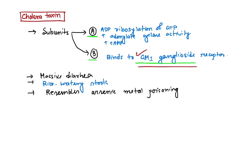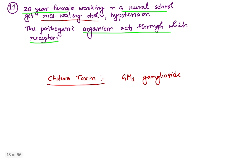Subunit A causes ADP ribosylation, which causes increased adenylate cyclase activity and increased cAMP. This cyclic adenosine monophosphate causes massive diarrhea by electrolyte loss from the intestinal epithelium, producing the typical rice water stool that can resemble arsenic poisoning. So cholera acts via cholera toxin through the GM1 ganglioside receptor.